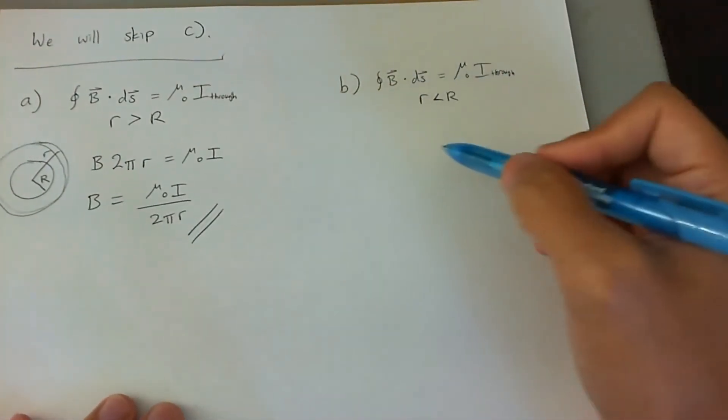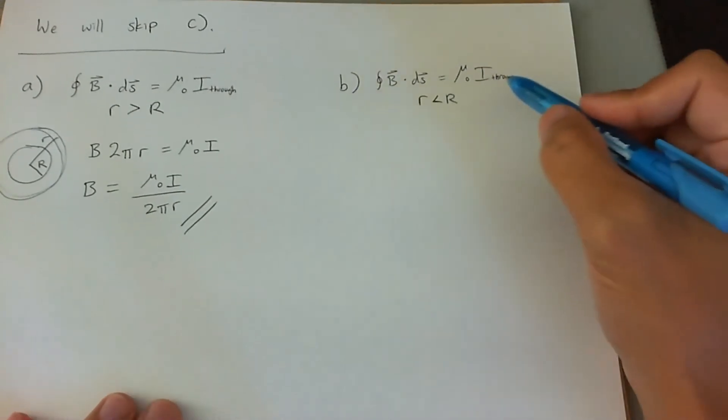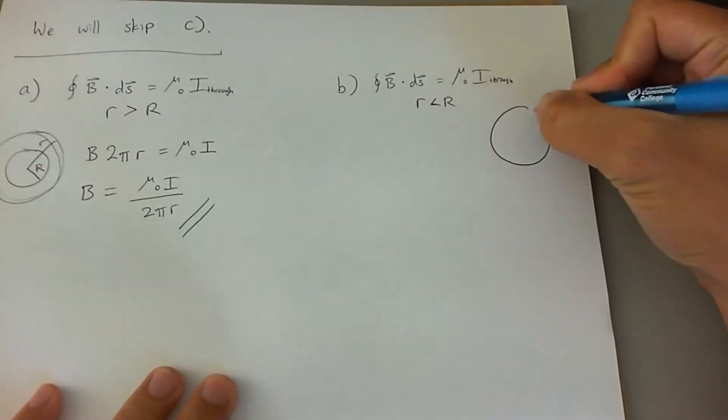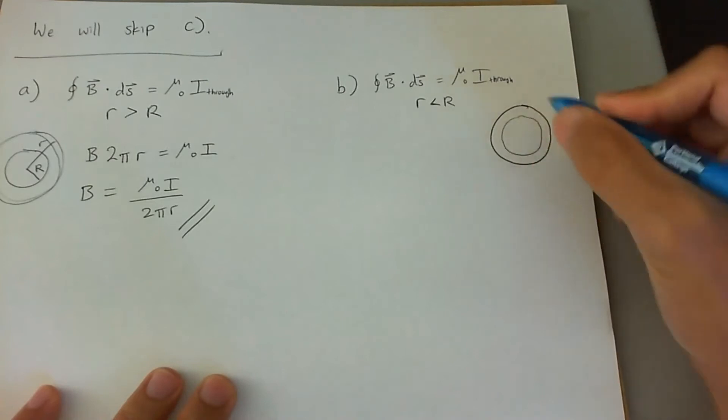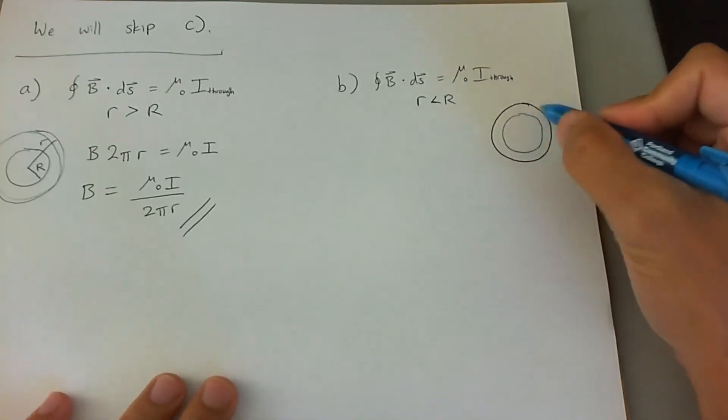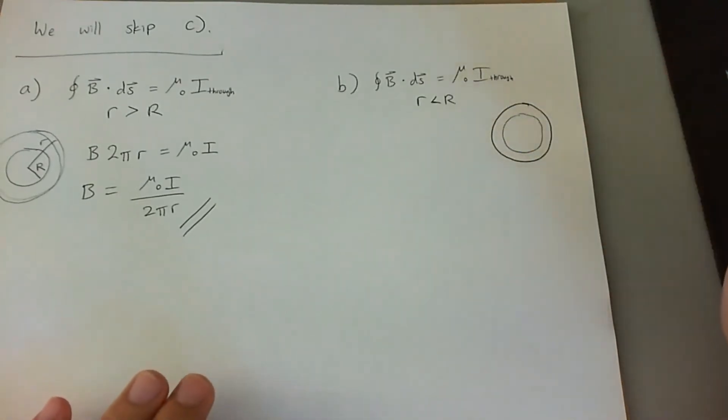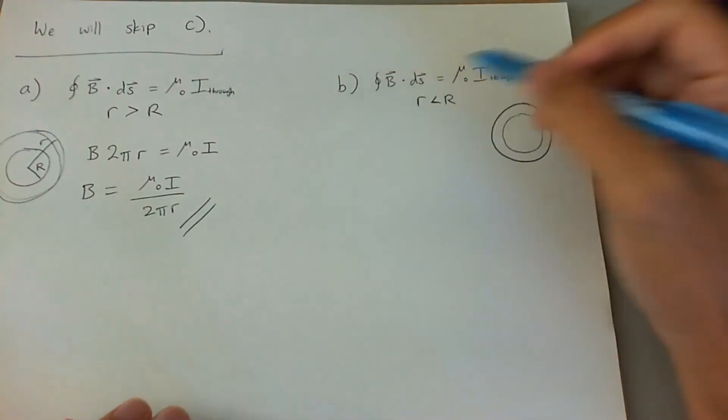Now, for the B field inside the cylinder, it's a little different because the current going through the Amperian loop, so here's the cylinder now, it's going to be that dark line, and then here is my Amperian loop. The current going through the Amperian loop is going to be a fraction of the current that goes through the actual cylinder. So let's go ahead and do this again.